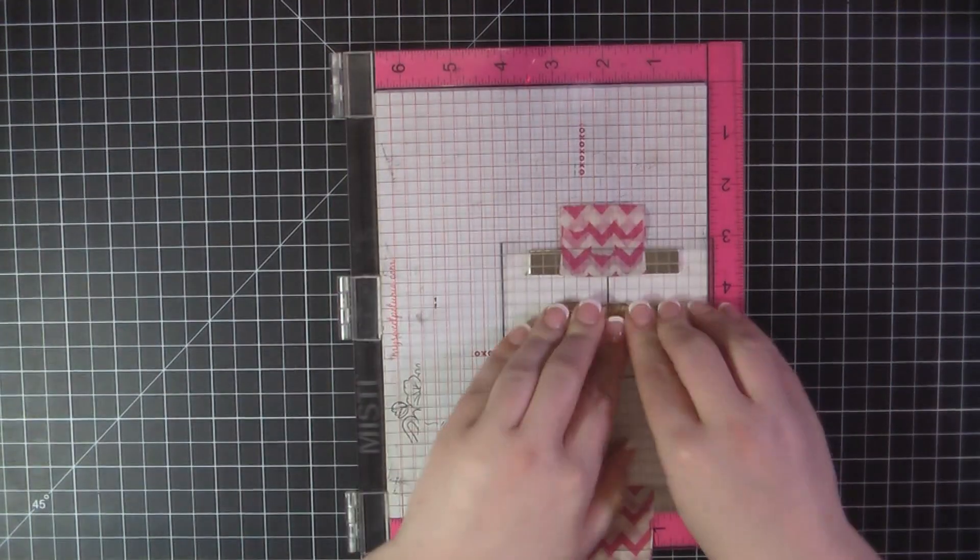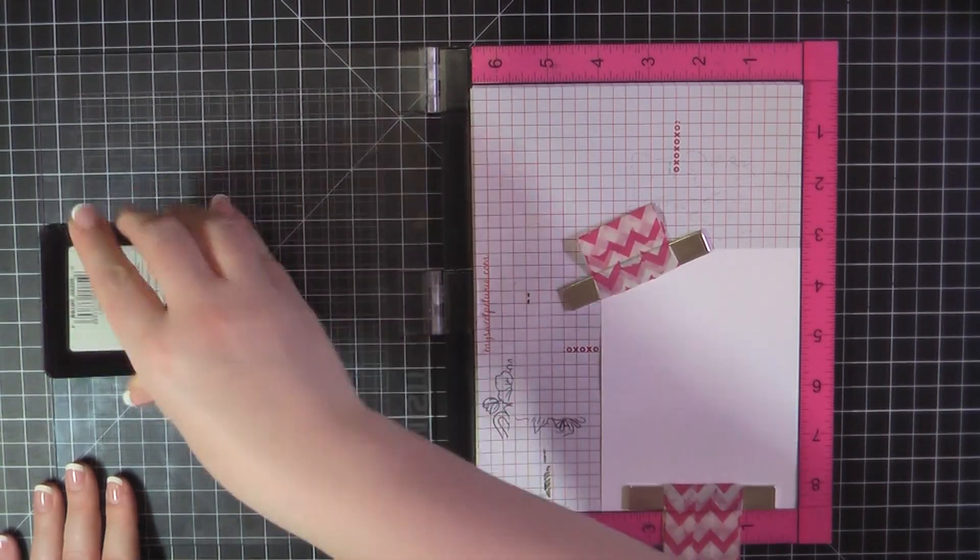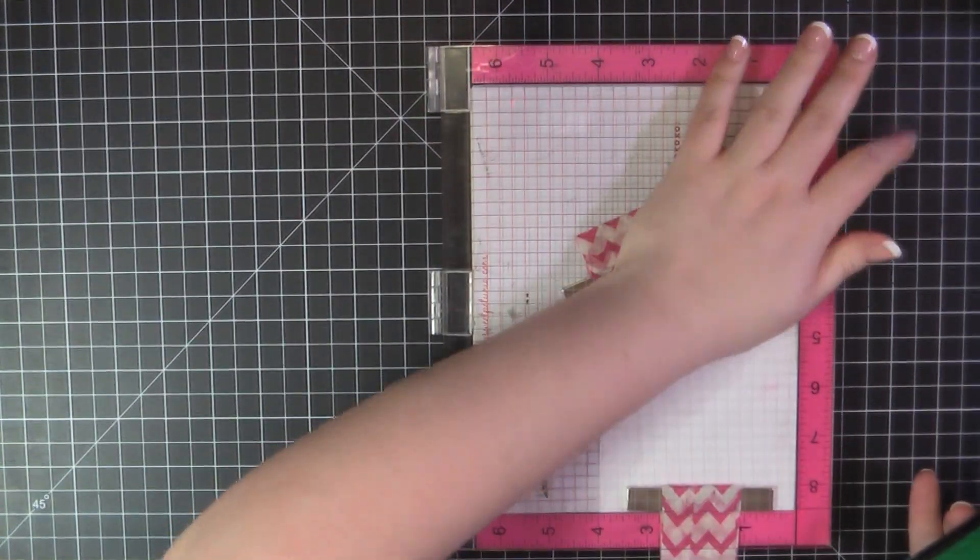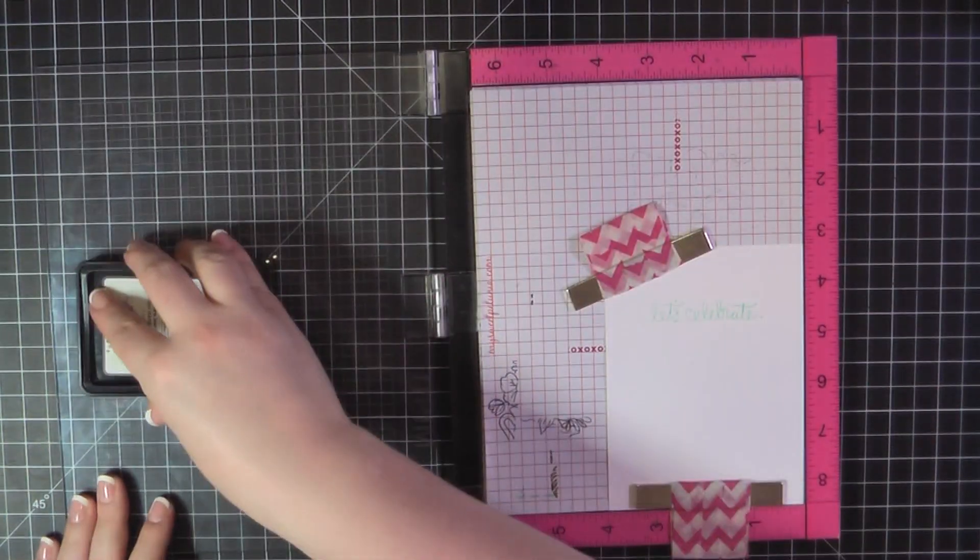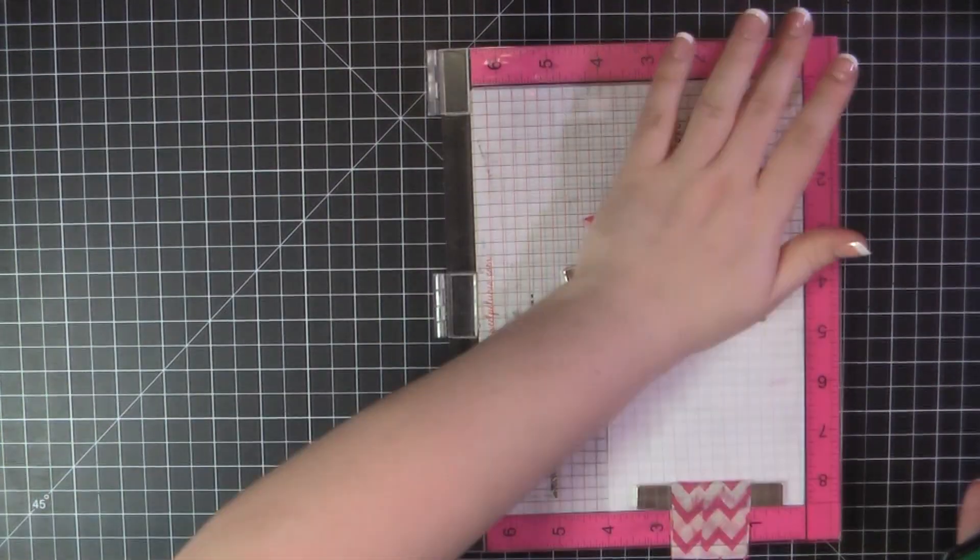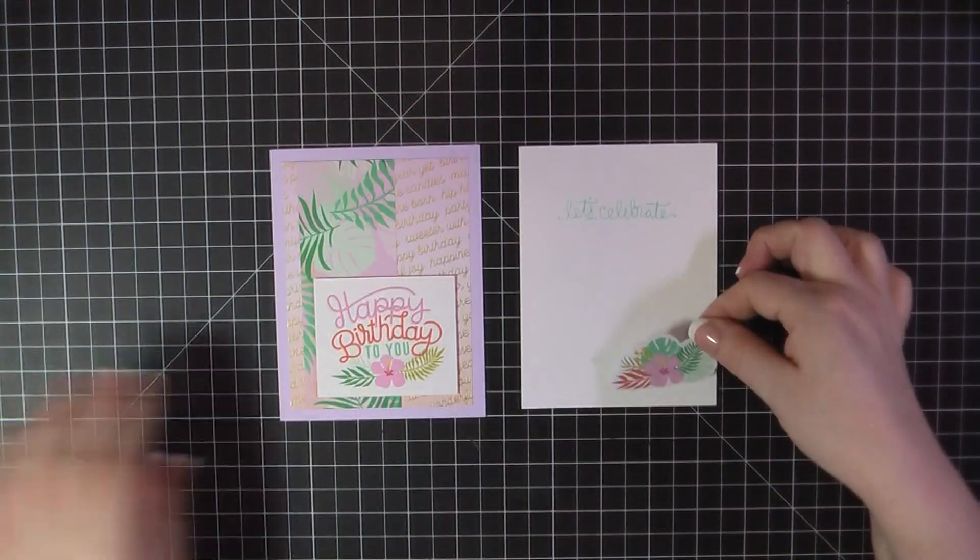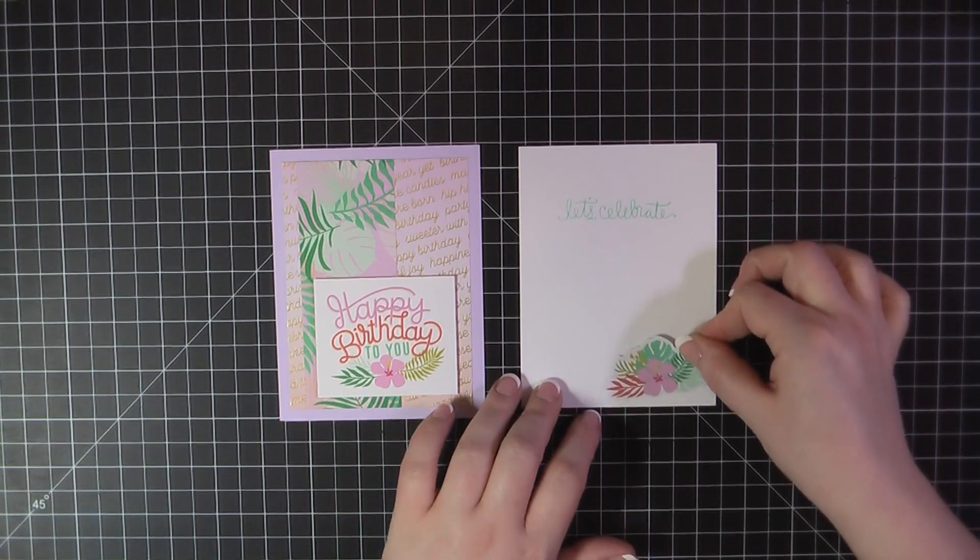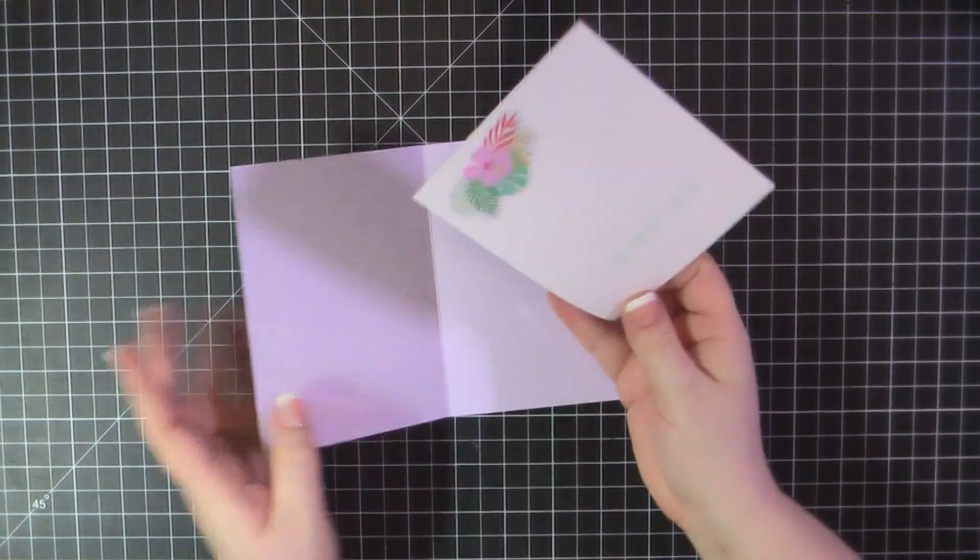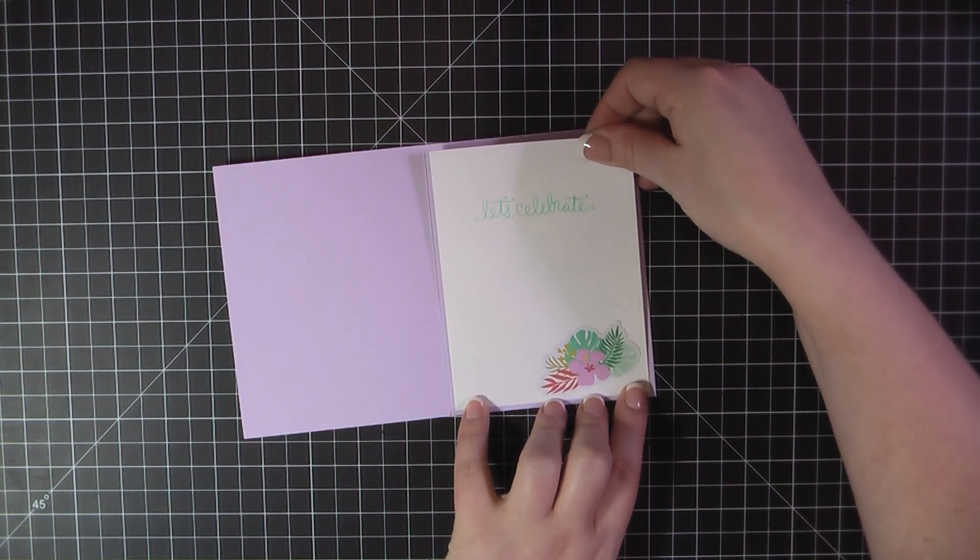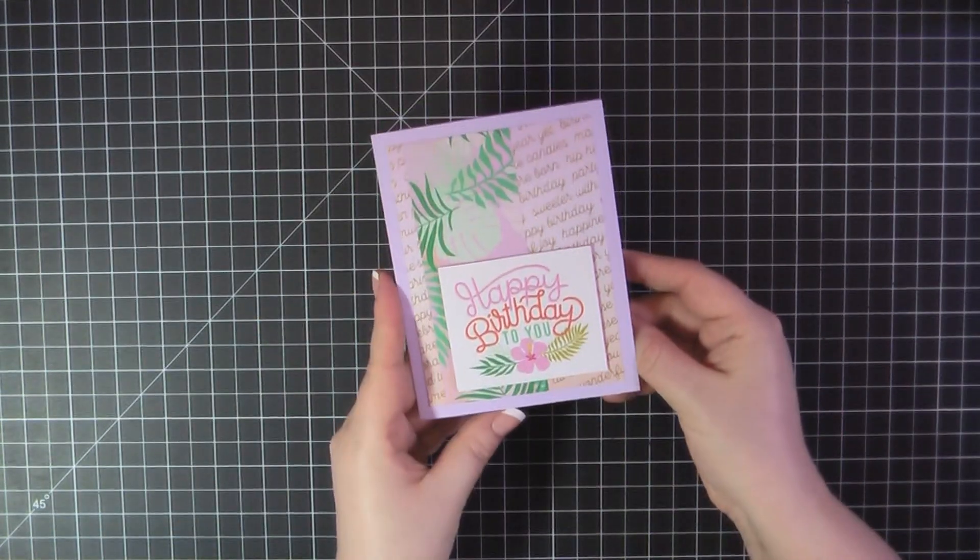And then I'll peel away the backing here and place that down on the card front. For the inside, I'm again on a Neenah panel trimmed to four by five and a quarter. I'm going to pull in a little bit of that blue from the front sentiment. And I'm stamping out Let's Celebrate using Lawn Fawn's Minty Fresh ink. Then I'm going to finish that off with one of the stickers. Again, pulling in those sort of tropical flowers and leaves from the front. I'll add some ATG to the back of that and then place it on the inside of my card base. And that will complete card number four.